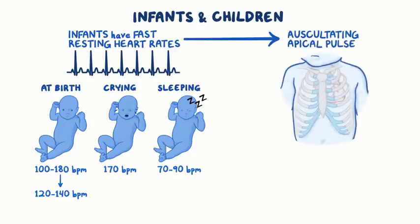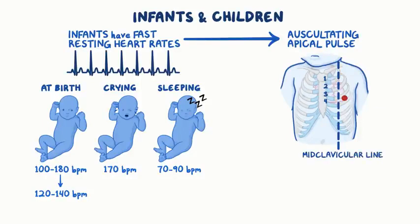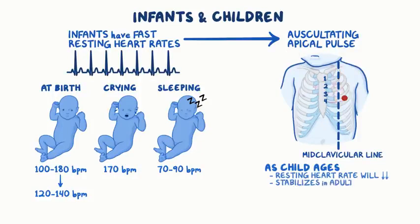Infants also have a heart that's more horizontal than in adults. The apical pulse should be between the 4th intercostal space, just lateral to the midclavicular line. As a child ages, their resting heart rate will decrease until it stabilizes in adulthood.